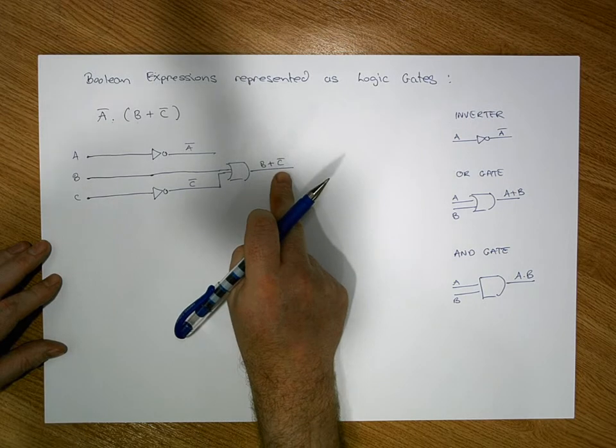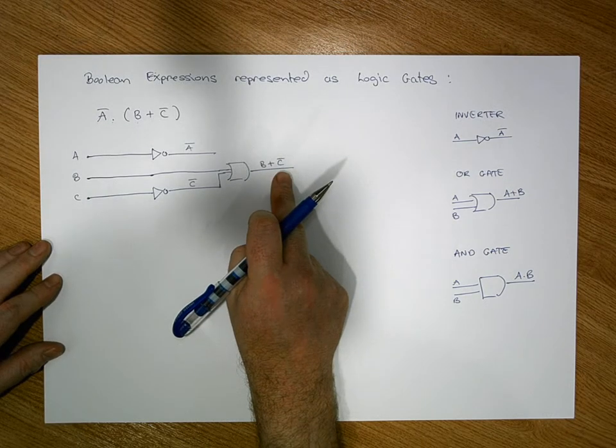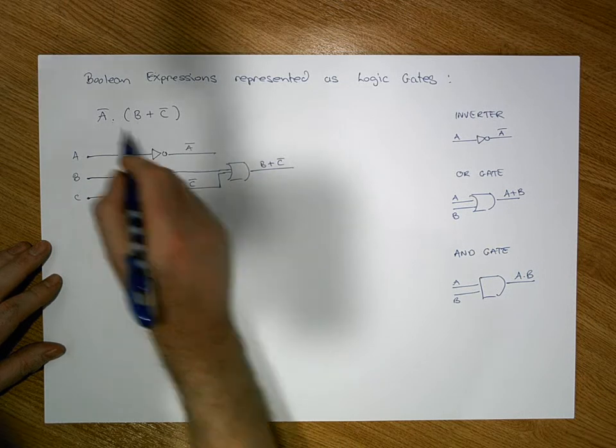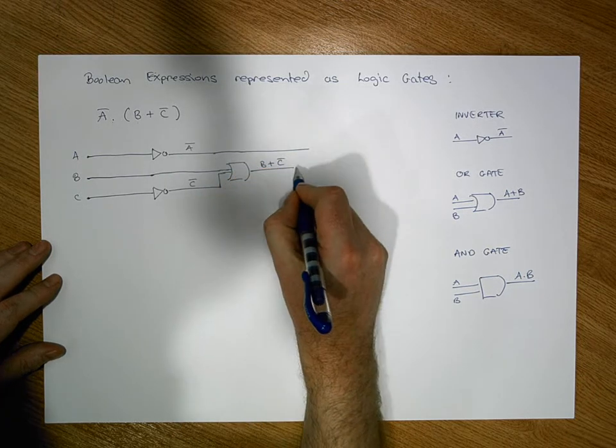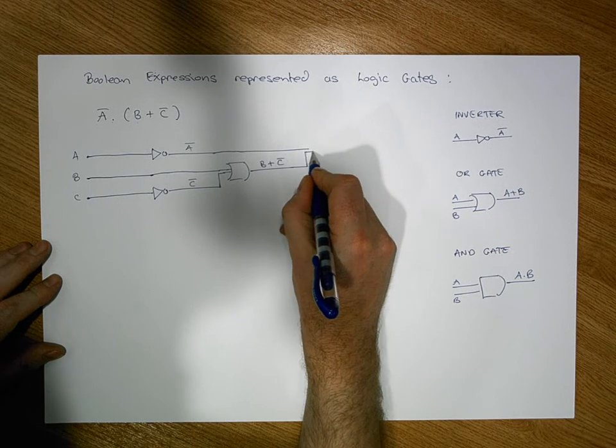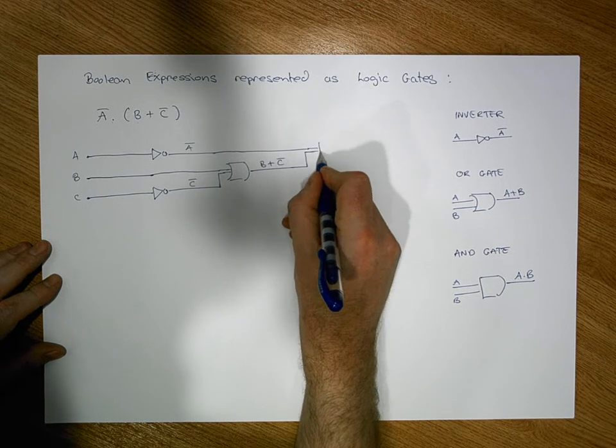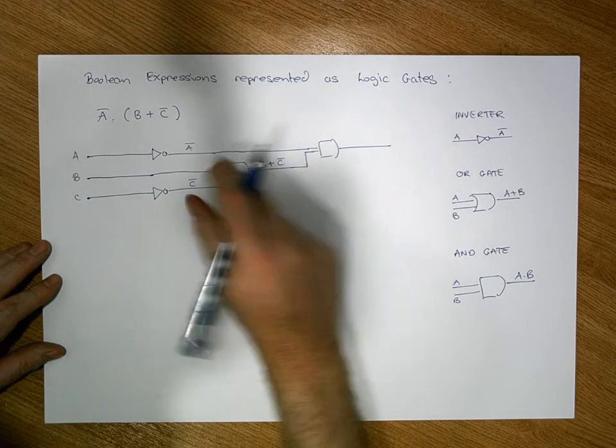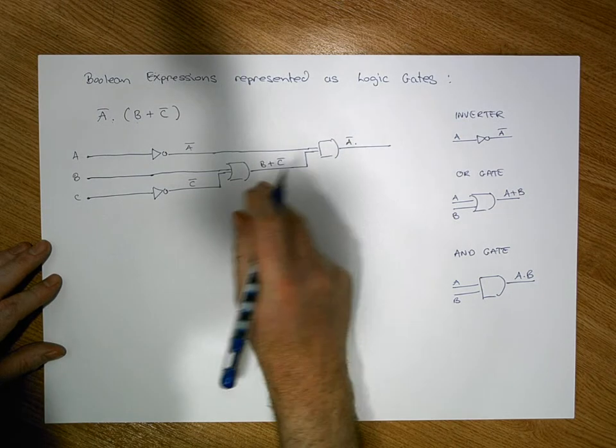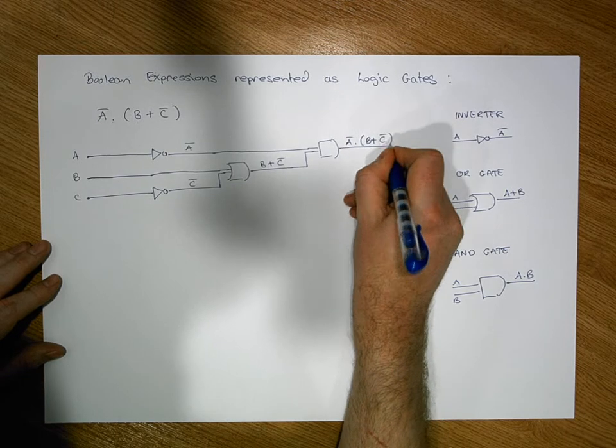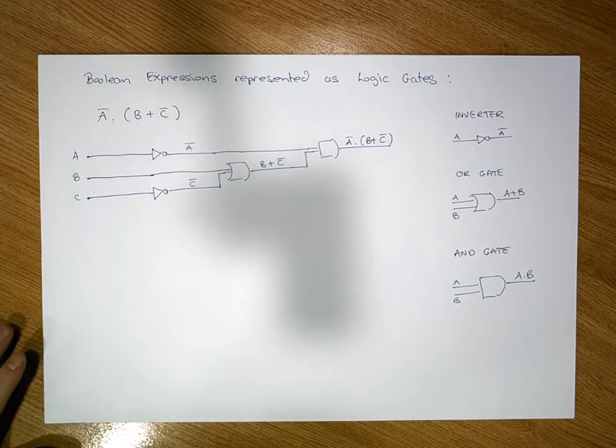Now that we have calculated the right operand to the AND, we'll carry the signal of the A bar across further, and also the right hand operand, and pass that into an AND gate. What we end up with is the output: A bar ANDed with the bottom input, which is B OR'd with C bar.